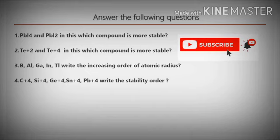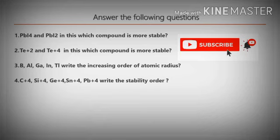Answer the following questions. First: PbI₄ and PbI₂ — which compound is more stable? Second: Te²⁺ and Te⁴⁺ — which is more stable? Third: Boron, Aluminium, Gallium, Indium, Thallium — write the increasing order of atomic radius. Fourth: C⁴⁺, Si⁴⁺, Ge⁴⁺, Sn⁴⁺, Pb⁴⁺ — write the stability order.